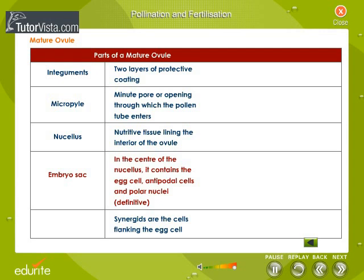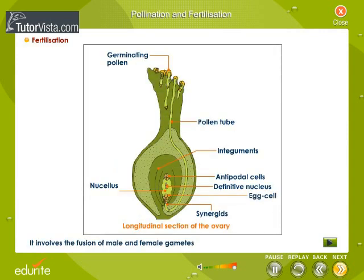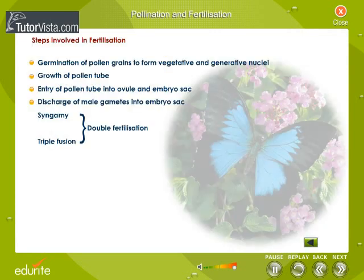Synergids are the cells flanking the egg cell. Fertilization involves the fusion of male and female gametes. The steps involved in fertilization are: germination of pollen grains, growth of pollen grain into tube formation, entry of the pollen tube into the ovule and embryo sac, discharge of male gametes into the embryo sac, and double fertilization.